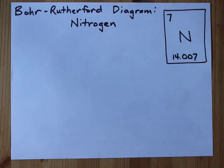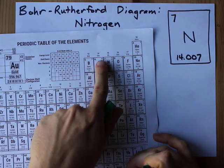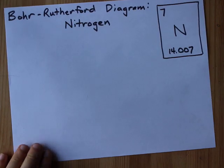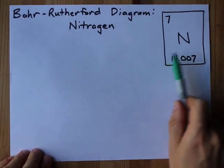If you look on the periodic table you'll find that nitrogen is element number seven and it has an average atomic mass of about 14.